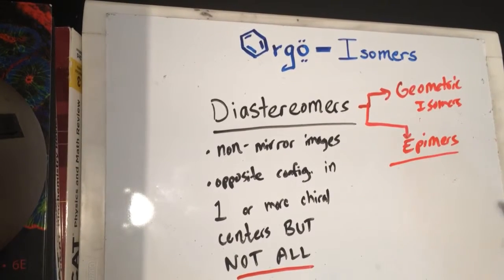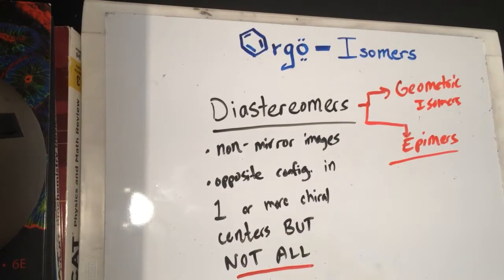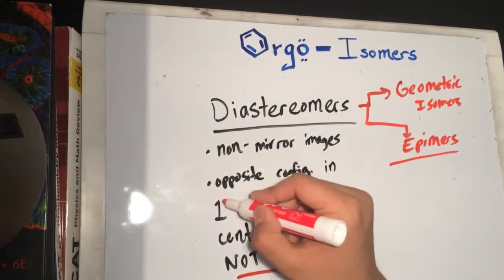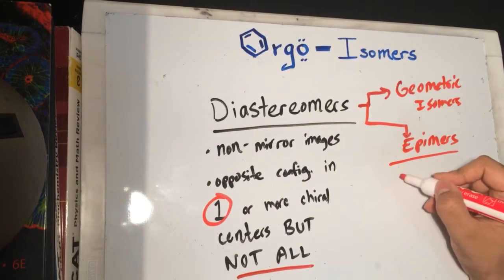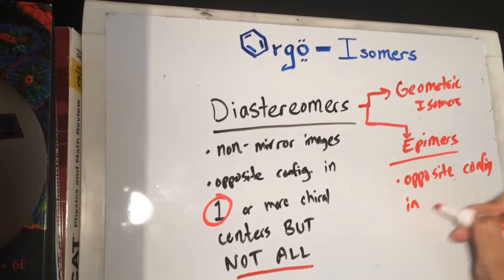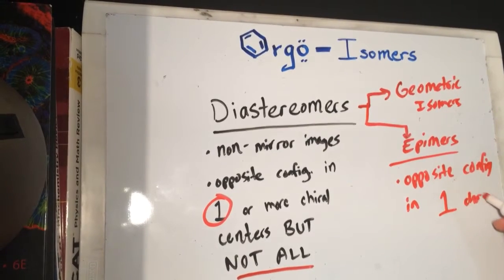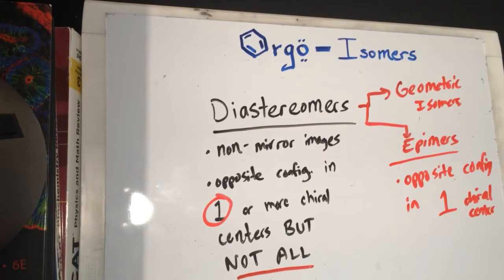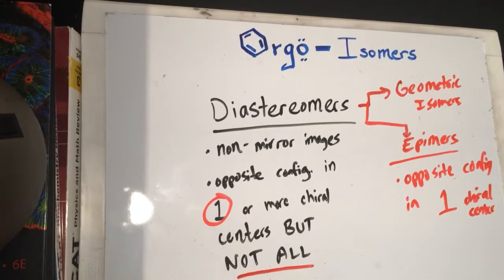I'm going to talk about epimers first. Epimers are a specific category of diastereomers — they're not mirror images, but we call two molecules epimers if they have opposite configuration in only one chiral center. So opposite configuration in one chiral center, also called a stereogenic center. That's the key thing about epimers: they are diastereomers, but specifically they have opposite configuration in only one chiral center.